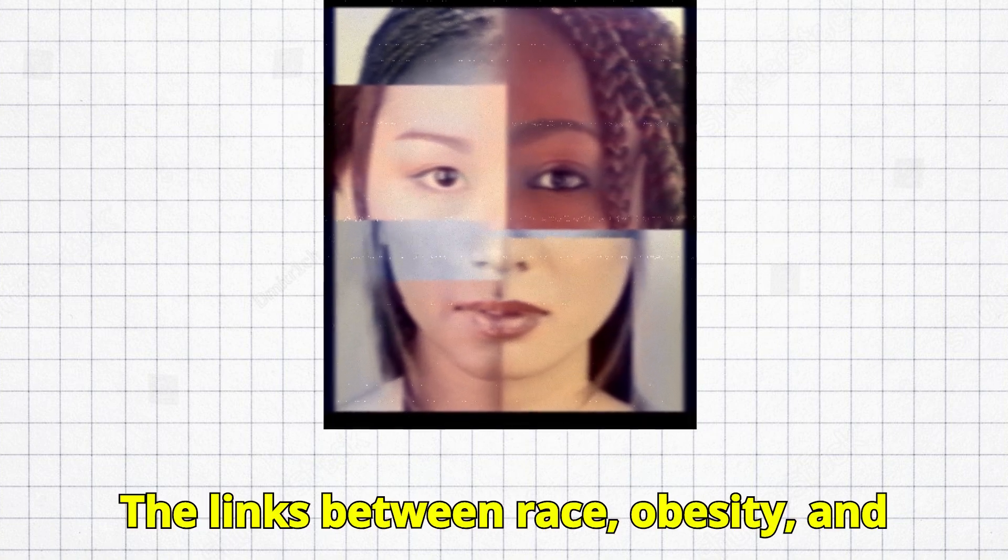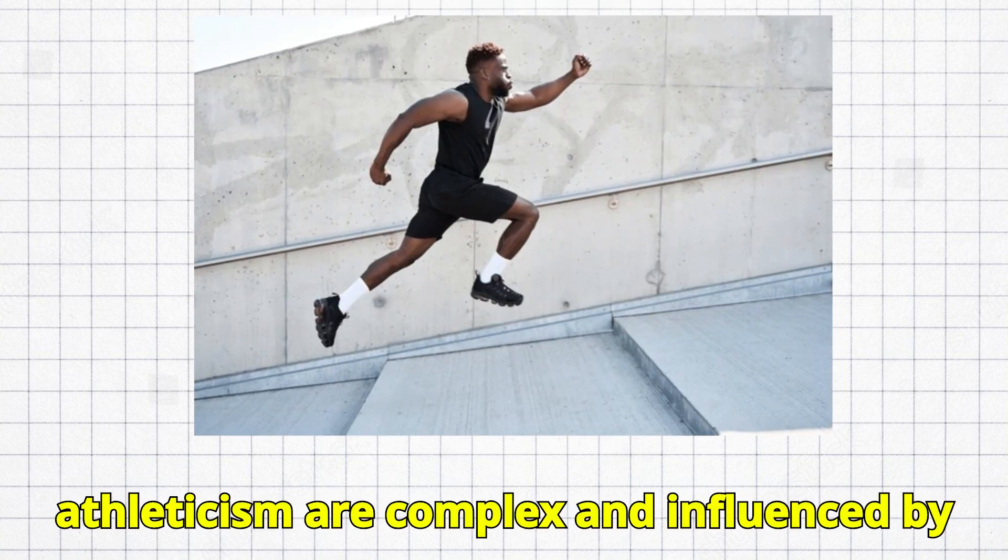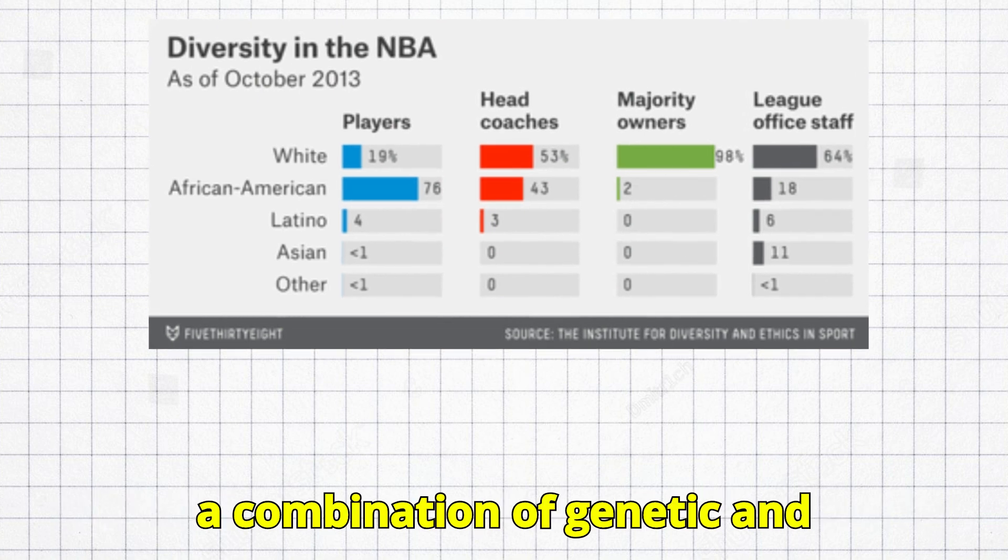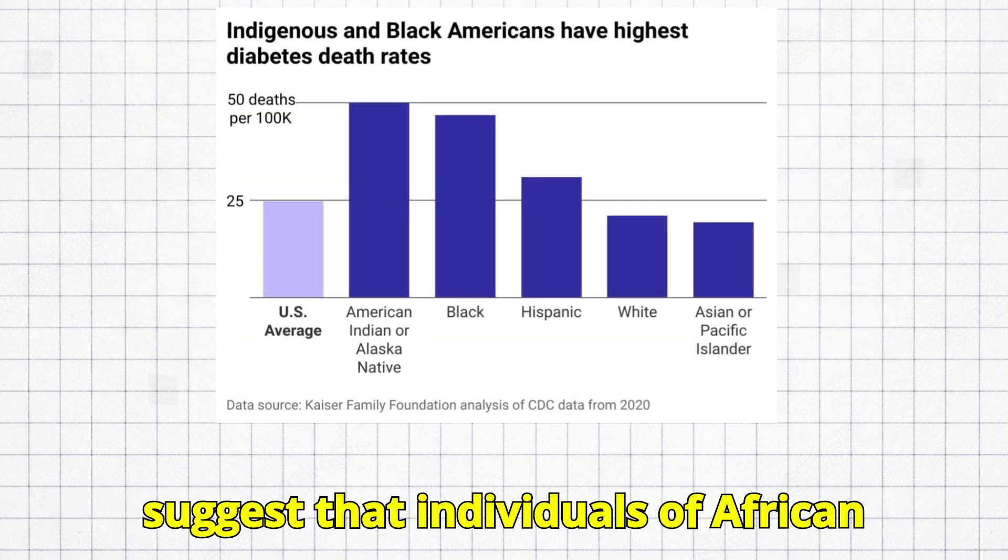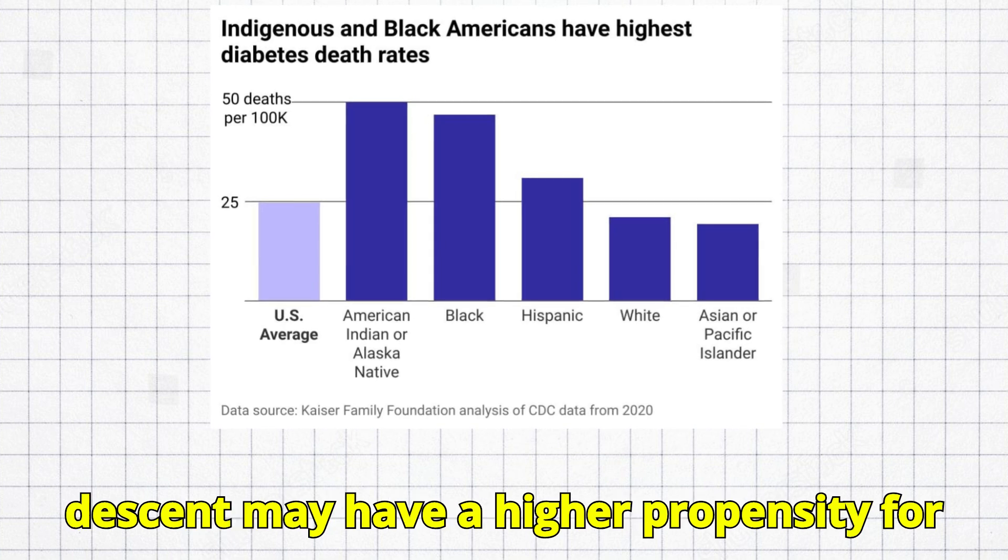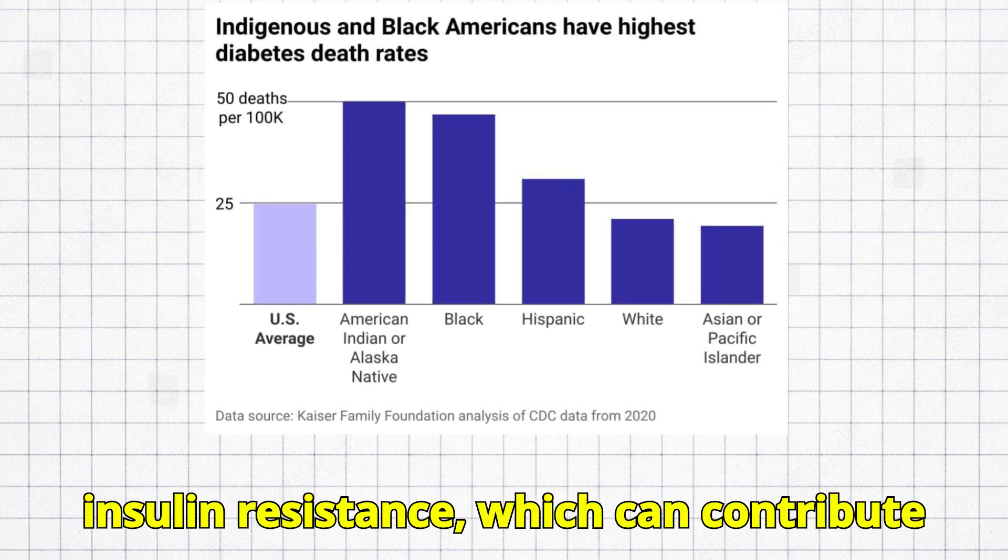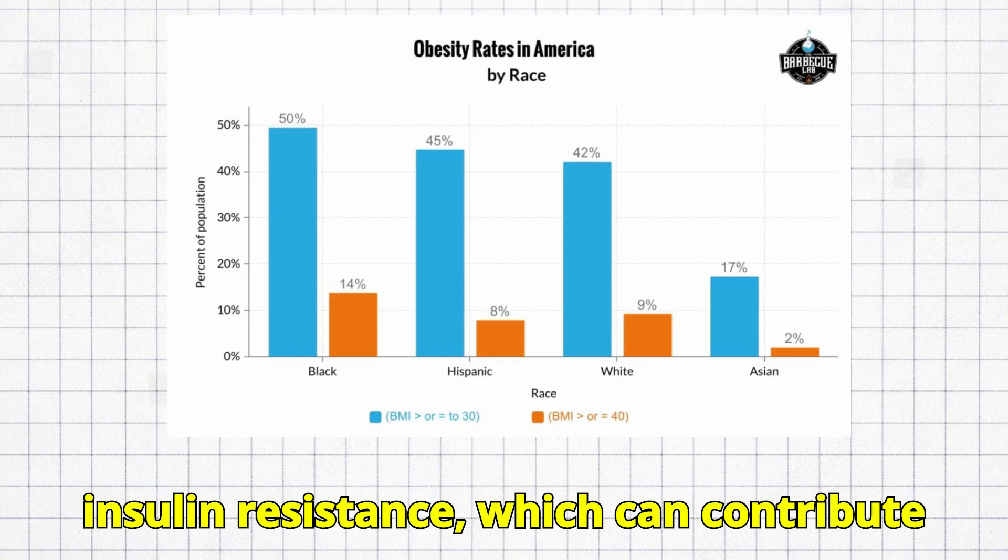The links between race, obesity, and athleticism are complex and influenced by a combination of genetic and environmental factors. Some studies suggest that individuals of African descent may have a higher propensity for insulin resistance, which can contribute to obesity.